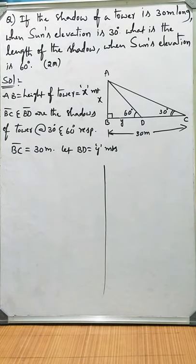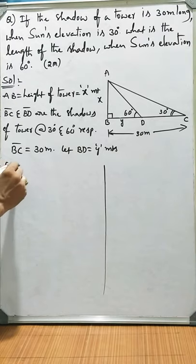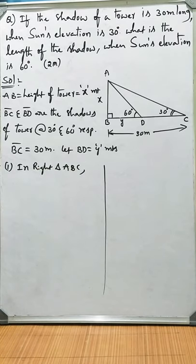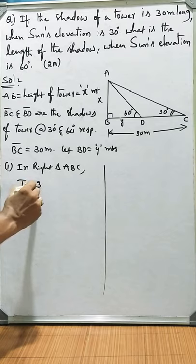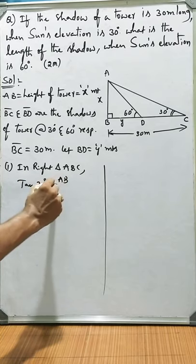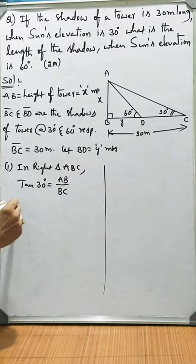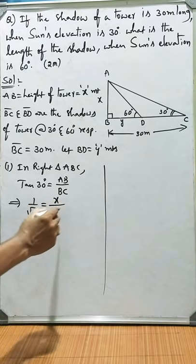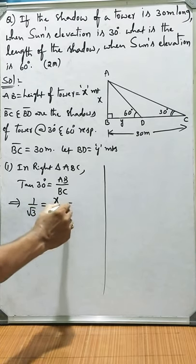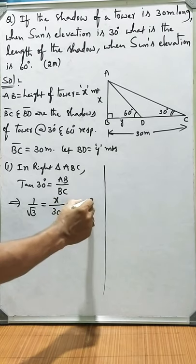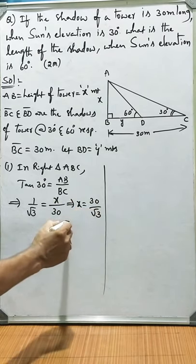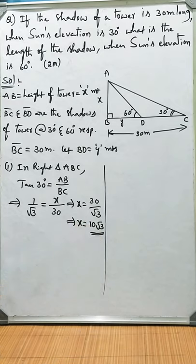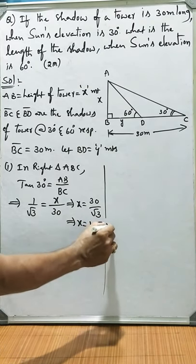Now let us take the right triangle. In right triangle ABC, tan 30 is equal to AB by BC. That is, tan 30 equals 1 by root 3 equals x by 30, which implies x is equal to 30 by root 3. In other words, x equals 10 root 3 meters.